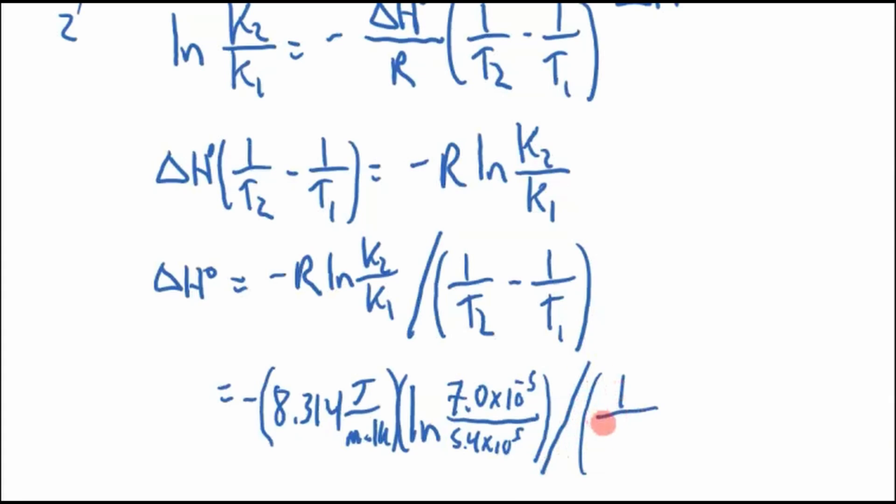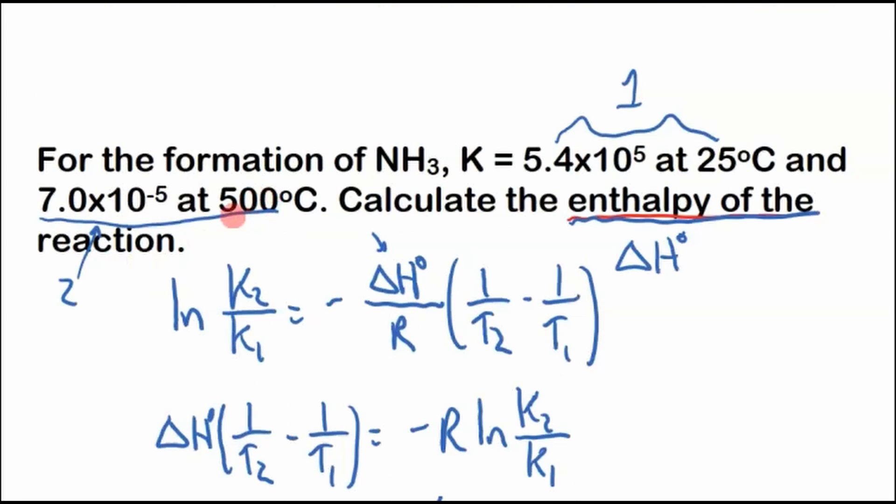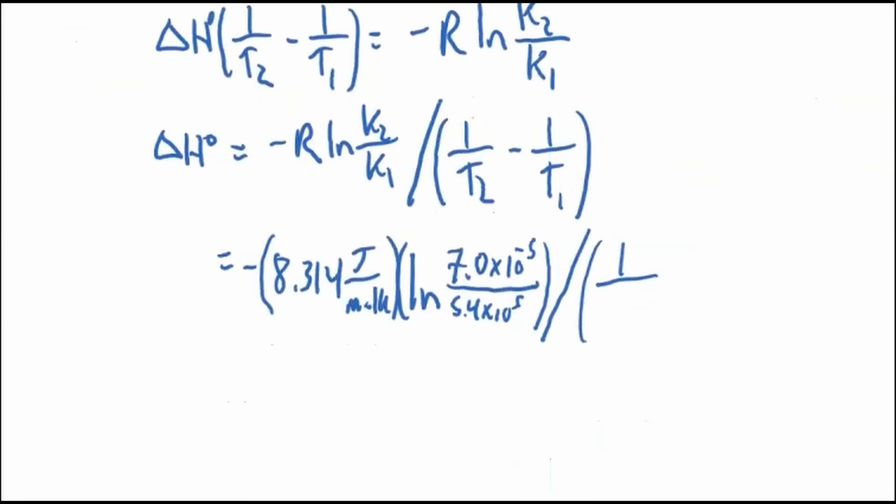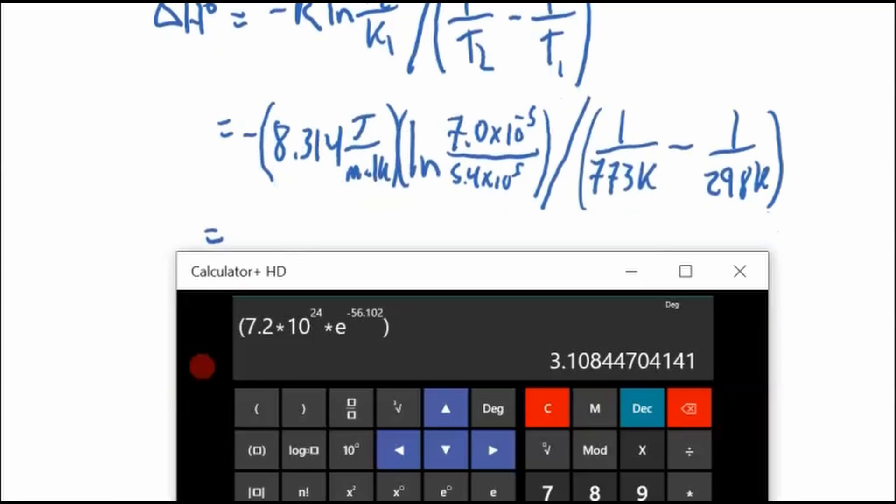All divided by, now what's our T2? It's nice to label the 2s and 1s so you don't get messed up. 500 degrees Celsius, we need to add that to 273.15 to get to Kelvin. This would be 773, 773 Kelvin minus 298 Kelvin. The 0.15 is not significant. We'll just plug it in now.